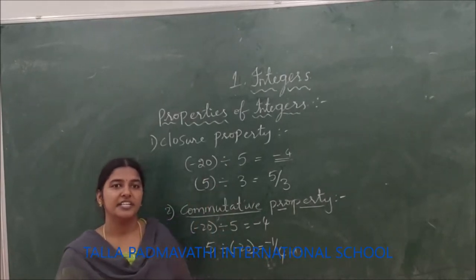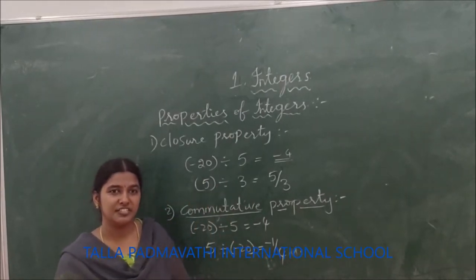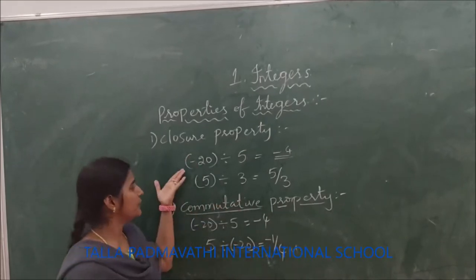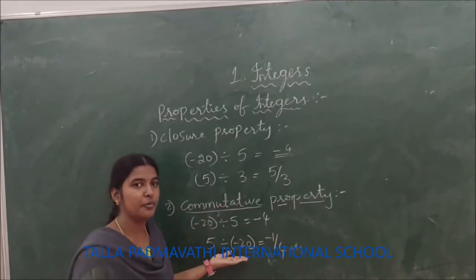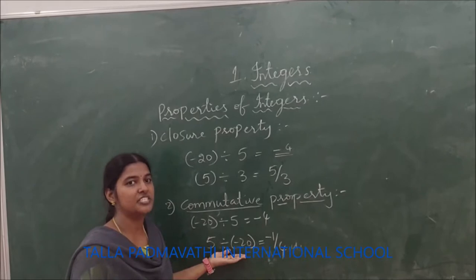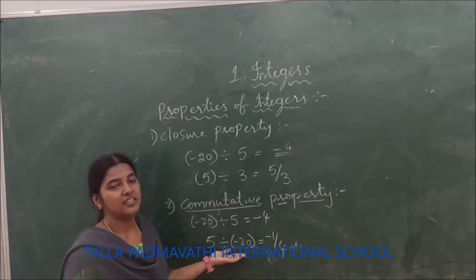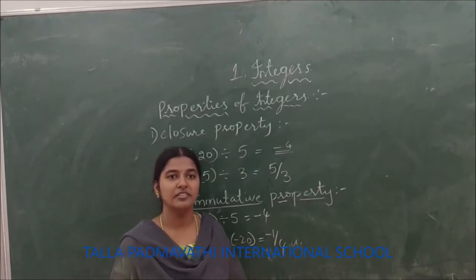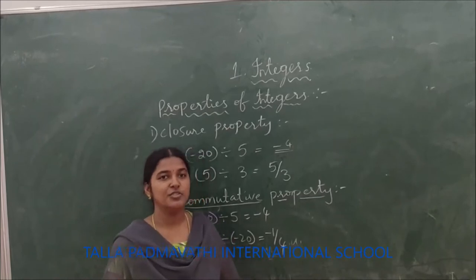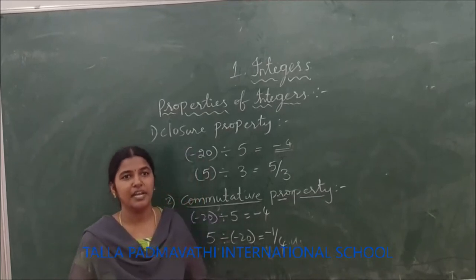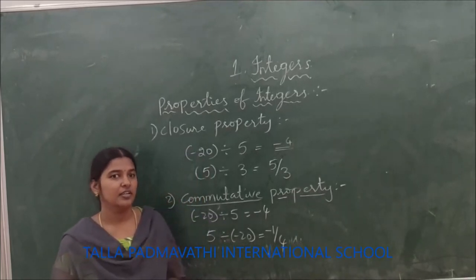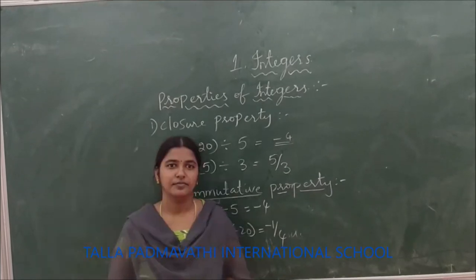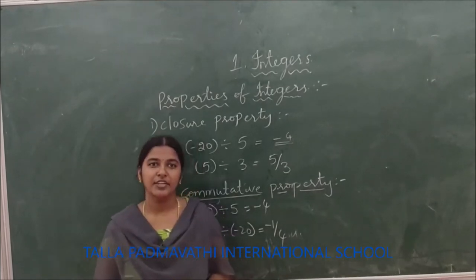The last property is associative property. So, closure property is not satisfied, commutative property is not satisfied, and associative property is also not satisfied under the division of integers. You can take an example and check it for your verification. Thank you.